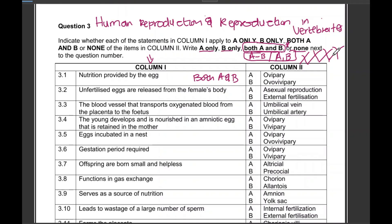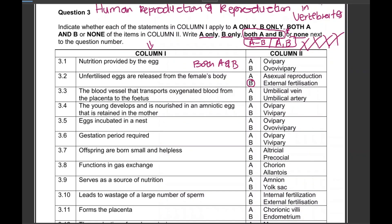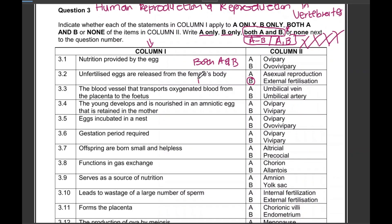'Unfertilized eggs are released from the female's body' — that is external fertilization, so the answer is B only. I'll circle the correct one; in the question paper you won't circle obviously, but the answer is B only.